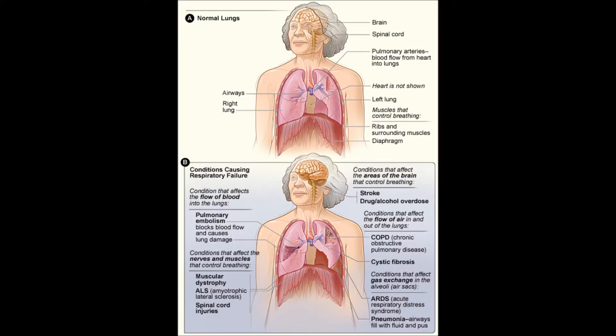Question 8. Signs and symptoms of acute respiratory failure can be easily overlooked. Knowing this, the nurse should be observant for each of the following that indicate the early stage of this medical emergency: A. Cyanosis and coma. B. Agitation and confusion. C. Hypotension and bradycardia. D. Poor respiratory effort and mottling.